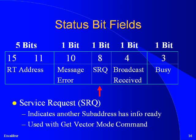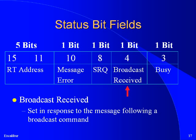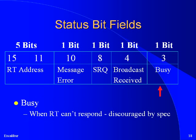A service request bit is a method of the RT informing the BC that an unexpected, urgent piece of information is available in the RT. The BC can use this to change its order of commands to give more priority to this RT. The broadcast bit indicates that a broadcast command was received by this RT in a previous message; RTs do not transmit a status word in response to a broadcast command. A busy bit indicates that a request for data by the BC has been denied because the RT is unable to respond at this time.